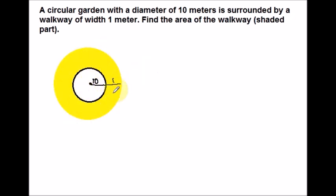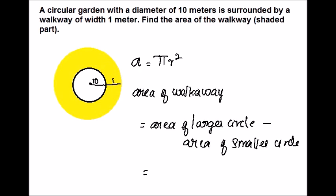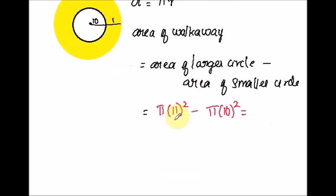The area of the walkway equals the area of the larger circle minus the area of the smaller circle. Using pi r squared: the larger circle has radius 11, so area is 121 pi; the smaller has radius 10, so area is 100 pi. The difference is 21 pi square meters.